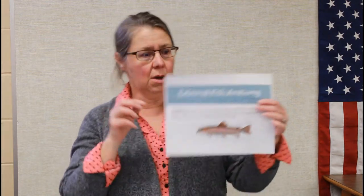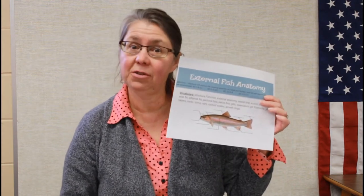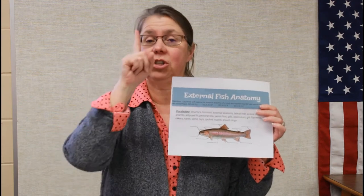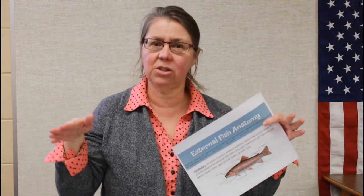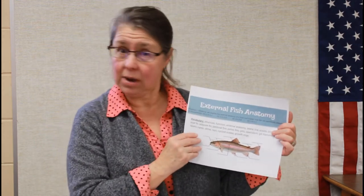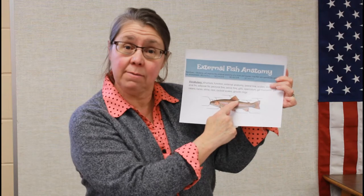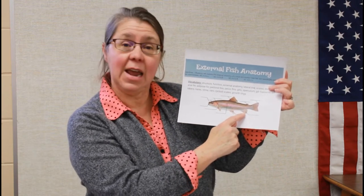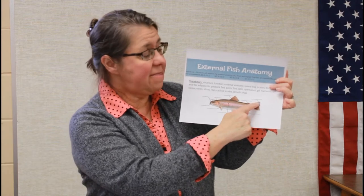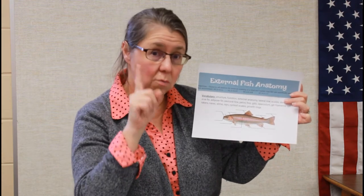Another part of the fish that we see are the fins, and trout have a lot of different fins. We see some on the top, some on the bottom, on the sides — and they all have different names. Some fins are singles and some come in pairs, one on each side of the body. Of the single fins, you have the dorsal fin on top, then you have an anal fin in the back, and then you have a caudal fin. Those three fins each have only one.